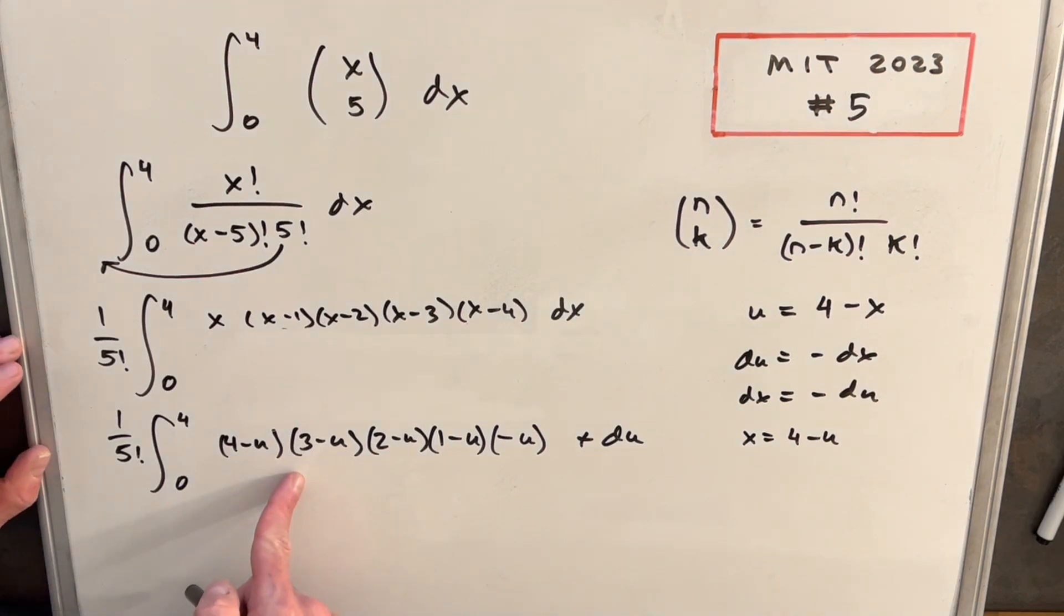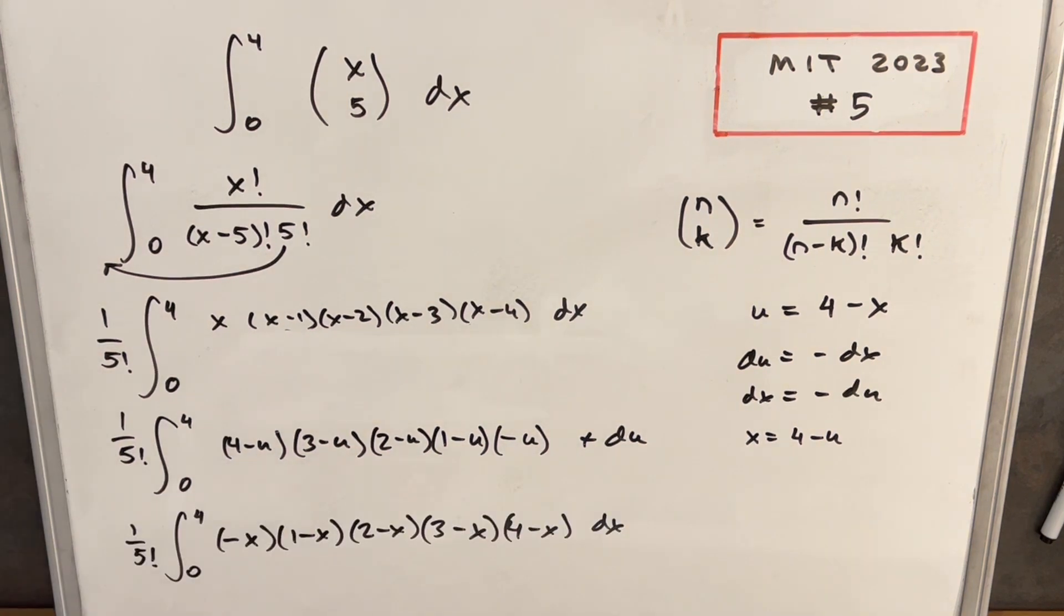Then next, all I'm gonna do, I'm actually gonna do a variable change. Because this is a definite integral, I can change my variable back to x without hurting anything. So let's just rewrite this all in x. Okay, so now I have this whole thing all in x.